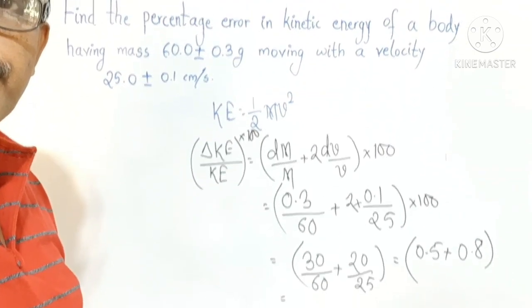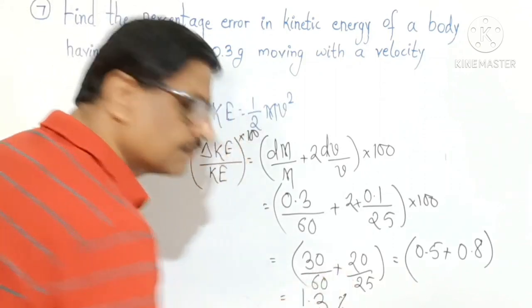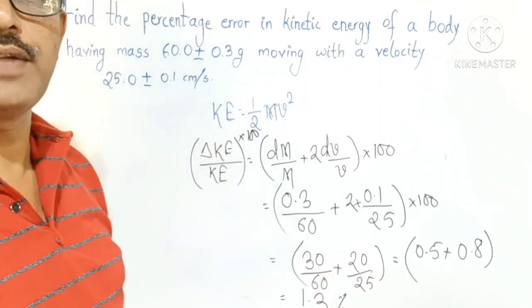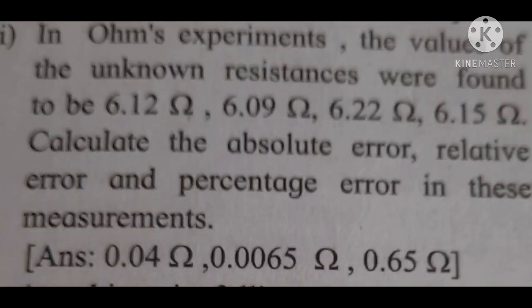The next problem: in Ohm's experiment, the values of unknown resistance were found to be 6.12 ohm, 6.09 ohm, 6.22 ohm, and 6.15 ohm. We need to calculate the absolute error, relative error, and percentage error in these measurements.